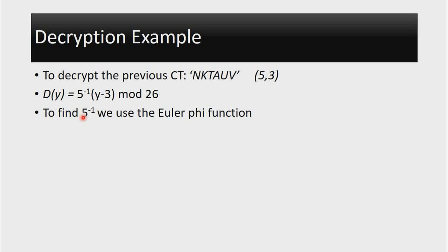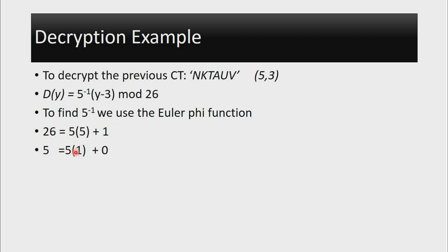The first thing is to find the greatest common divisor of 26 and 5. We express 26 in terms of 5: 26 = 5 × 5 + 1, which is the biggest multiple of 5 we can subtract. Then we express 5 in terms of 1: 5 = 5 × 1 + 0. The greatest common divisor is the element above the 0, so GCD(26, 5) = 1. This proves that 5 has an inverse in mod 26.